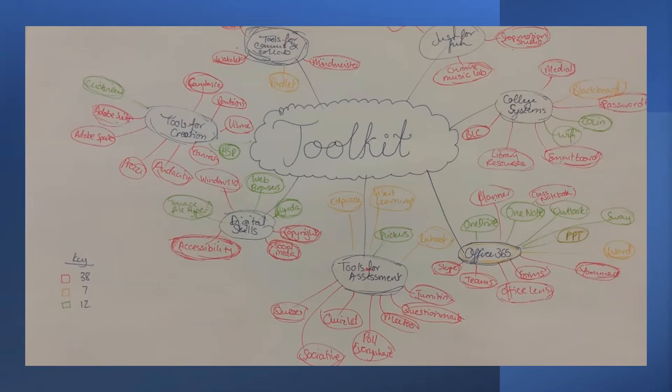We started categorizing the tools and color-coding them — red for urgent, needed straight away. We had lots of tools for assessment in red because assessments were always coming up. We included Office 365, college systems such as password management, Medial, our college intranet, and tools for communication, although those were more rudimentary back then.